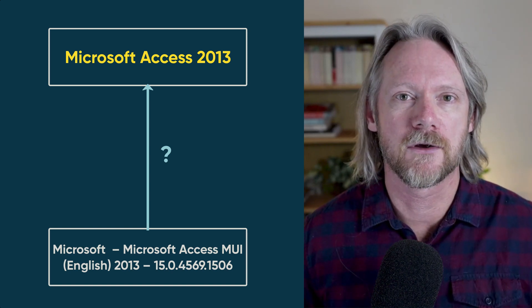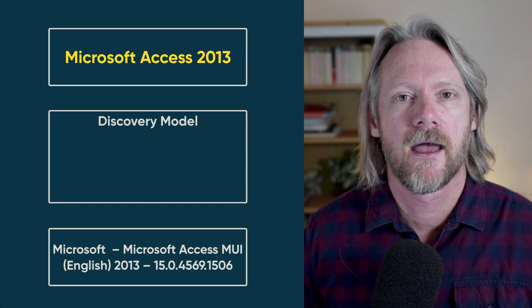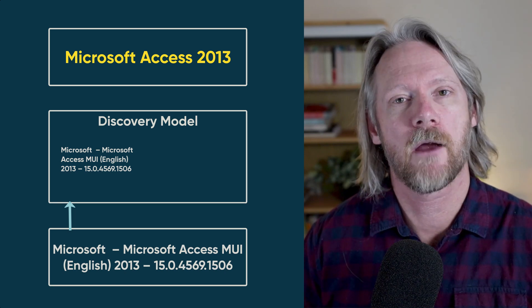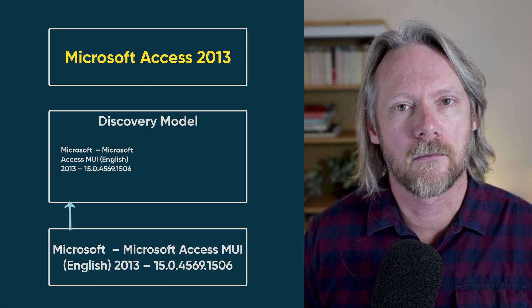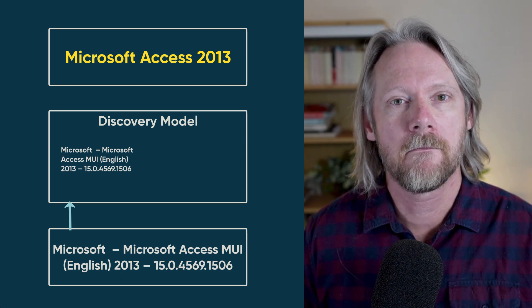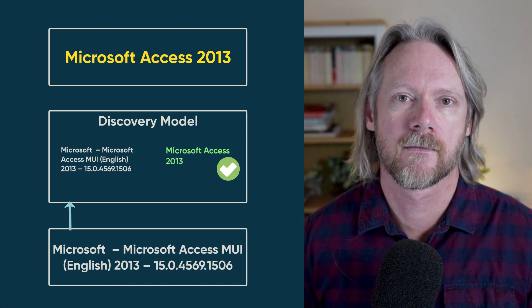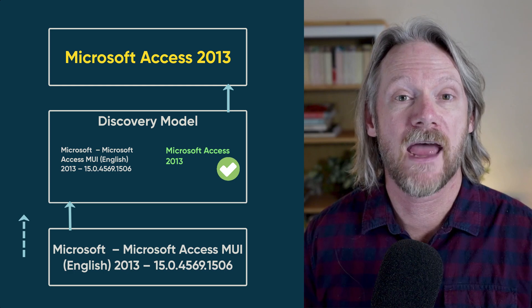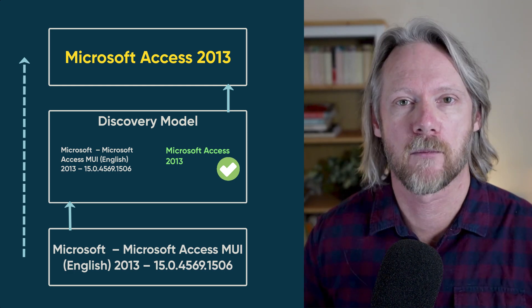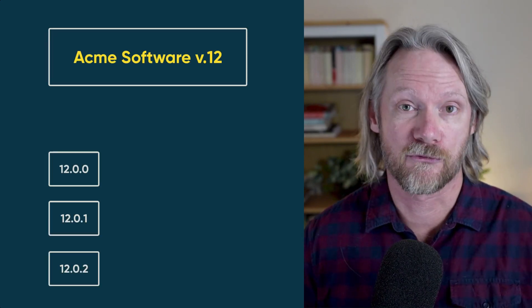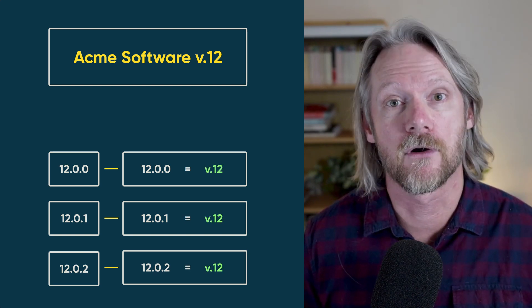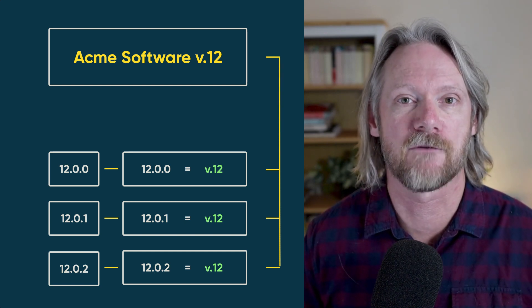The way we do this is by using discovery models. Every software installation is matched to a discovery model, and if no discovery model exists, we create one automatically. When we talk about normalization in software asset management, we mean normalizing discovery models. These normalized values are then associated with a software product model, and we can thereby match the installations we have with our product models. So we could have three different software installations with three different discovery models, all containing the same normalized values, and therefore all pointing to the same software product model.